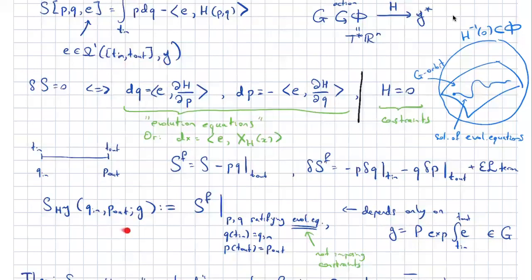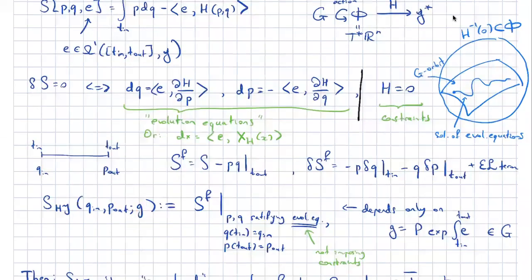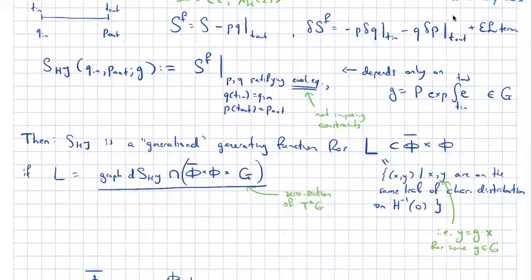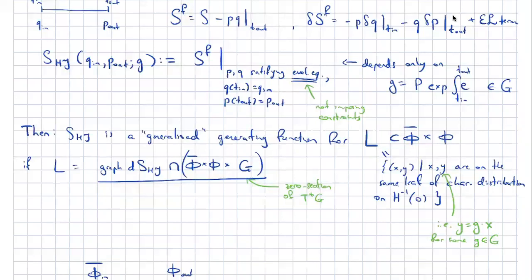By evaluating the original action — adjusted by a boundary term — on the solutions of the evolution equations, this construction gives a generalized generating function for the evolution Lagrangian. The evolution Lagrangian is just all solutions of all equations of motion, including the constraints, stuck to initial and final time. It is still a Lagrangian. It's not projectable to a graph of some map from the initial phase space to the final phase space because this is a theory with constraints, but it's still a Lagrangian.